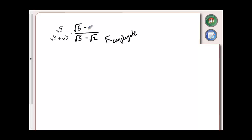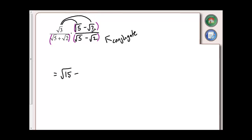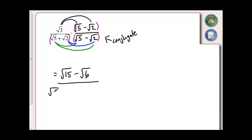Whatever I do to the bottom, I also have to do to the top, so I'm going to multiply the top as well by root 5 minus root 2, and it's like these are all in brackets. So when I multiply, I get the square root of 3 times the square root of 5, giving me the square root of 15, then minus the square root of 6. On the bottom, because it's two binomials, I multiply root 5 by everything in my second bracket and root 2 by everything in my second bracket. I get root 25 minus root 10, plus root 10, then finally minus the square root of 4.